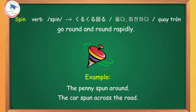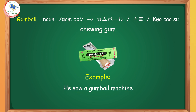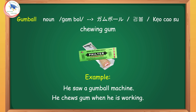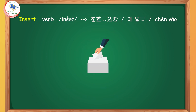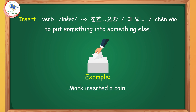Gumball: chewing gum. Example: He saw a gumball machine. He chews gum when he is working. Insert: to put something into something else. Example: Mark inserted a coin. He inserted the money in the parking meter.